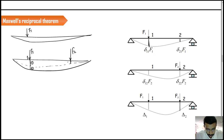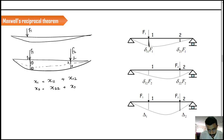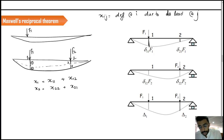Similarly is the case of location 2. The deflection at 2 due to the application of F2 follows the same logic. If I write the deflection at 1, I can say that it has two parts: X11 plus X12. And if I write the deflection at 2, I can say it also has two parts: X22 plus X21. Here, Xij means deflection at i due to a load at j.